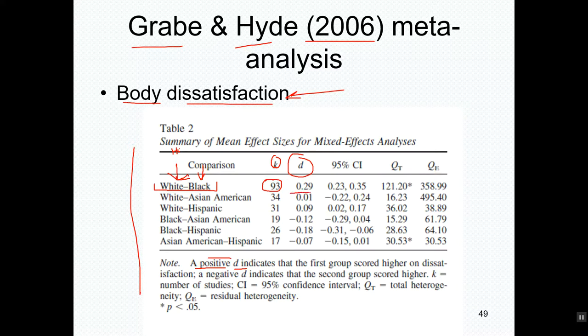The d value is 0.3, which is a moderate effect size. White people are more dissatisfied with their bodies than black people. Regardless of what the Clark doll study tells us about how black children view themselves, a more direct way of looking at this across people of different ages is that compared to white people, black people have more body satisfaction.